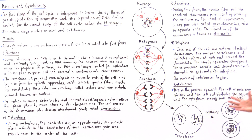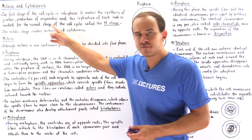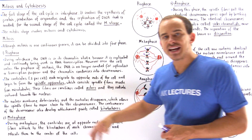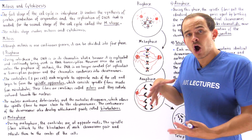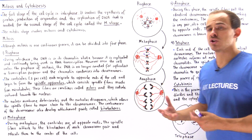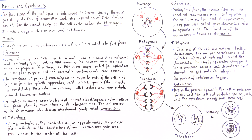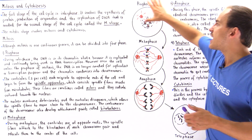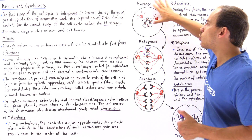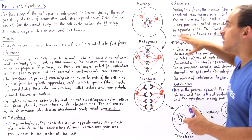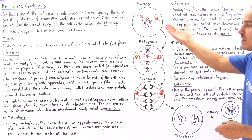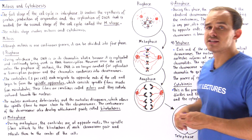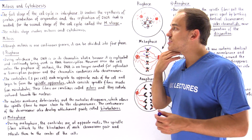Once these cells enter interphase, they can once again grow and enlarge, and eventually each one of these cells will be exactly the same as the original cell in terms of size and the amount of cytoplasm found inside.